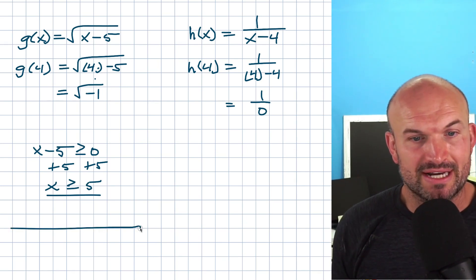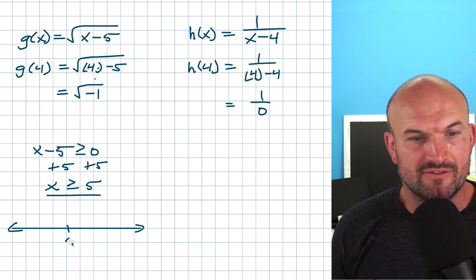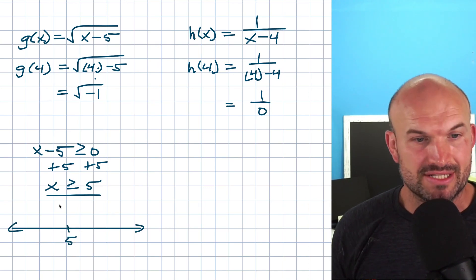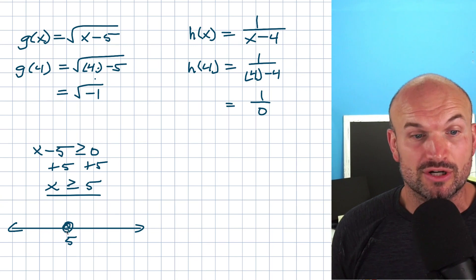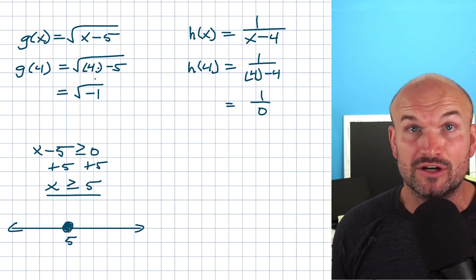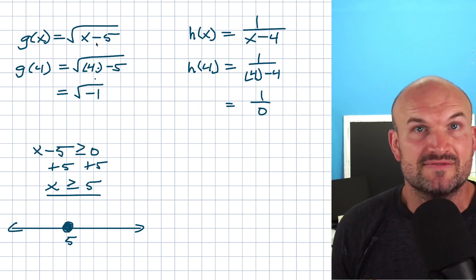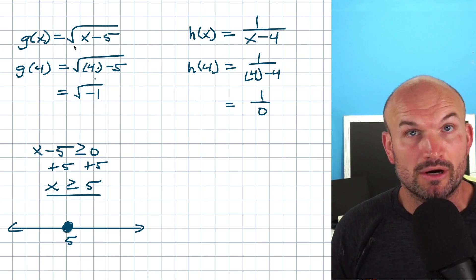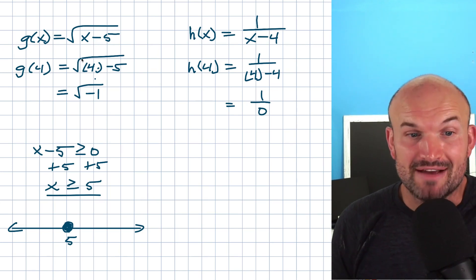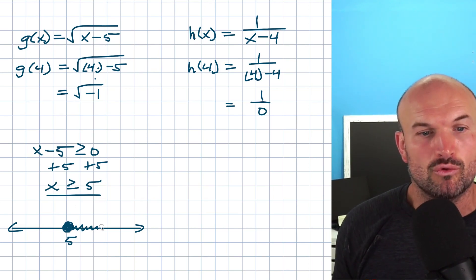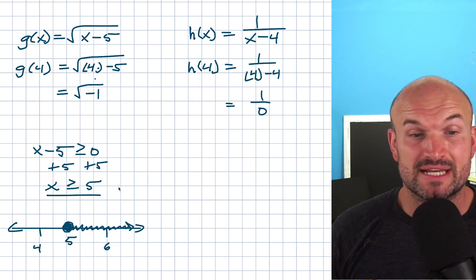If I graph this on a number line, I start at 5. Since it's greater than or equal to, that's a filled-in circle — 5 is included because √(5 - 5) = √0 = 0, which works. Then all numbers greater than 5 are included, going to the right. That's how we can represent this domain graphically.